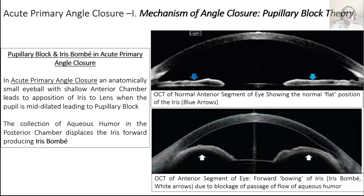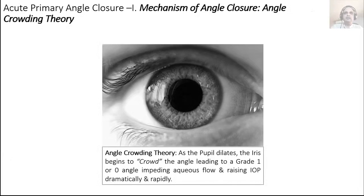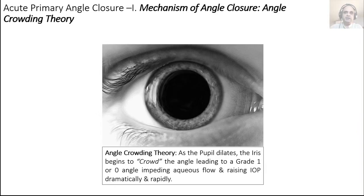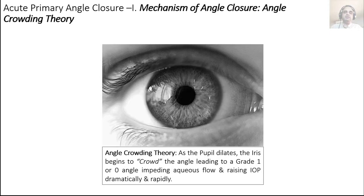The angle crowding theory — the underdog theory: as the pupil dilates, the mass of the iris moves towards the anterior chamber angle, which is already a grade 2 angle in these hypermetropic individuals with shallow anterior chambers. As the iris starts crowding it, the already narrow angle becomes grade 1 or grade 0, precipitating an acute primary angle closure attack. Think of it like a purse string — as the purse string opens, the peripheral material bunches up.